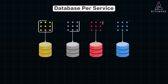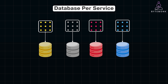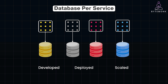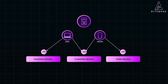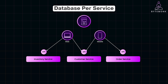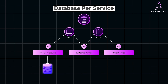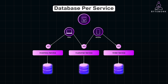The database per service pattern means that each microservice has its own separate database. This isolation ensures that each microservice can be developed, deployed and scaled independently without having to coordinate with other services over data. By adopting this pattern, we eliminate the risk of changes in one service affecting others. For example, in an e-commerce platform, you might have separate services for managing inventory, customer data and order processing. Each service has its own database, so updating the schema in the inventory service database doesn't interfere with the customer or order service database.